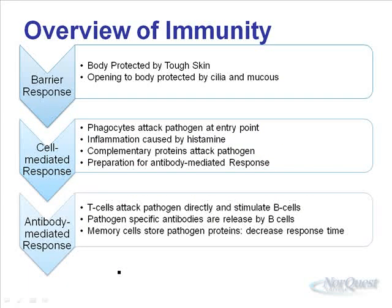In a general overview of immunity, the first response is protective barriers. We have a layer of skin, and most of our openings — our mouth, ears, and eyes — are filled with either cilia or mucus to keep things from getting too deep within our body. If things do get in through a cut, inhalation, or ingestion, there's a cell-mediated response where phagocytes attack the pathogen at the entry point. Often there's inflammation caused by the production of histamine. Complementary proteins, which exist in our blood all the time, go and attack the pathogen as well. Some of the cells involved in the cell-mediated response also prepare for an antibody-mediated response.